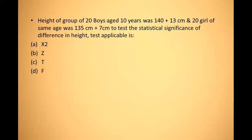Next question: the height of a group of 20 boys aged 10 years was 140±13 cm, and 20 girls of the same age was 135±7 cm. To test the statistical significance of the difference in height, which test is applied? Since sample size is 20, the z-test is excluded. Two groups are given — boys and girls — so unpaired t-test is the best option.